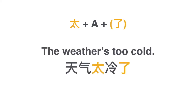太热了. The weather's too cold: 天气太冷了. Notice how 冷 is pronounced almost like L-U-N-G. It's spelled L-E-N-G, third tone, but it sounds like L-U-N-G. 冷. It's not 冷 [flat], it's 冷 [falling]. 天气太冷了.